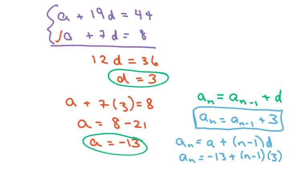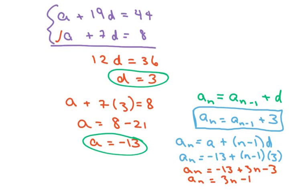The only thing is I have to clean this up, so this is going to be a sub n equals negative 13 plus 3n minus 3, which ends up being a sub n equals 3n minus 16.